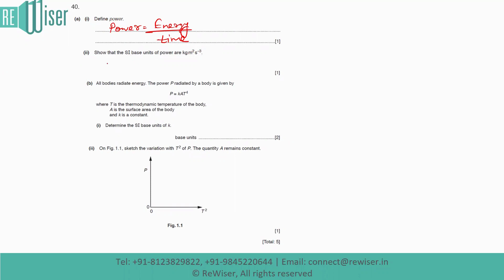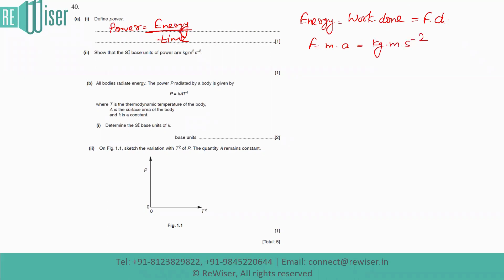To find the SI base units of power, we first need to find the units of energy. Energy is obtained from work done, since work done is defined as energy. Work done is force times displacement. Force, by Newton's second law, is mass times acceleration, giving units of kg·m·s⁻². Displacement has units of meters.